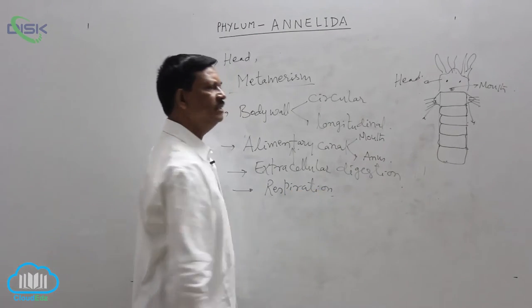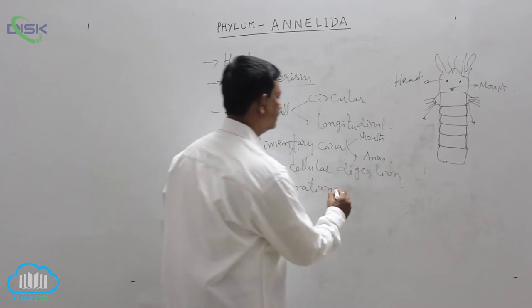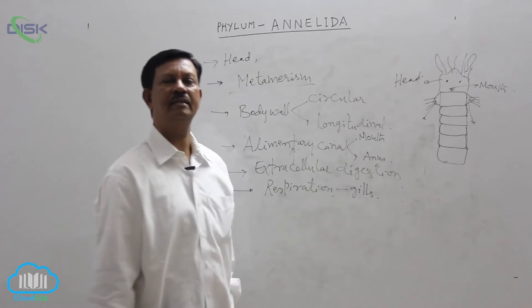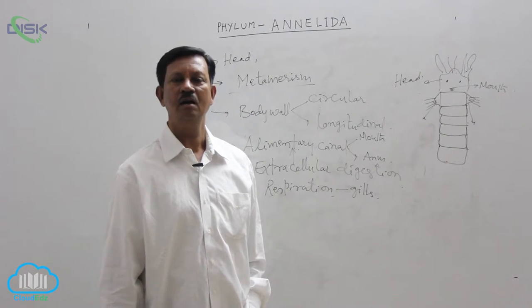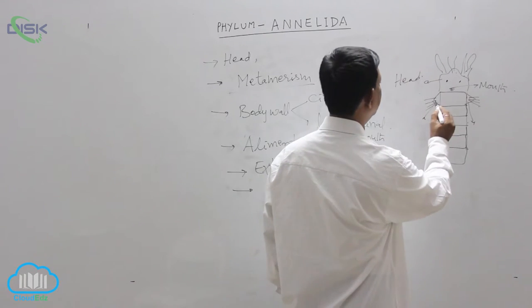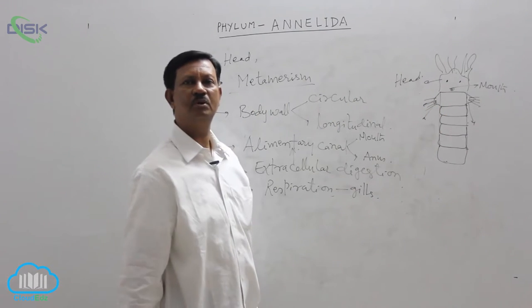Respiration. The main respiratory organs are present in some animals. In some animals respiratory organs are absent. Respiration takes place by simple diffusion through the body cavity. In some animals parapodia also helps in respiration. Example Neeris.